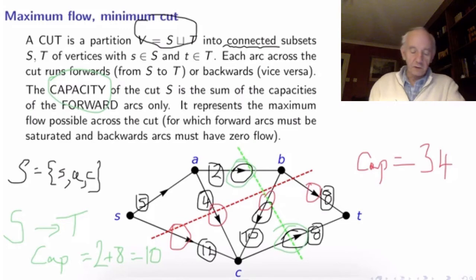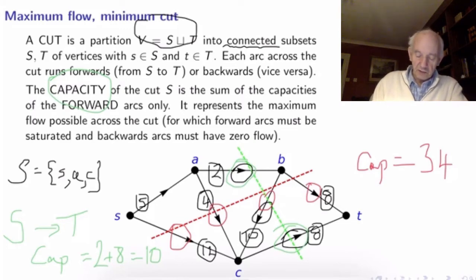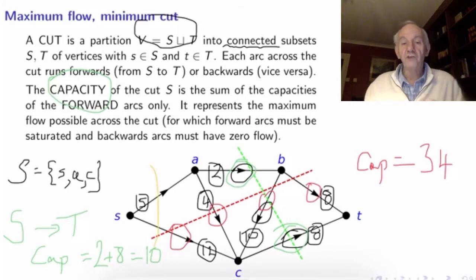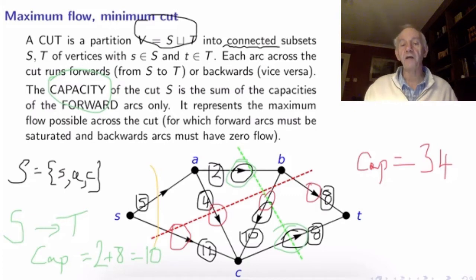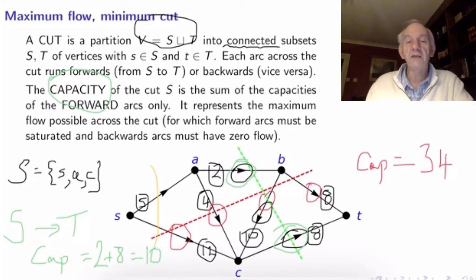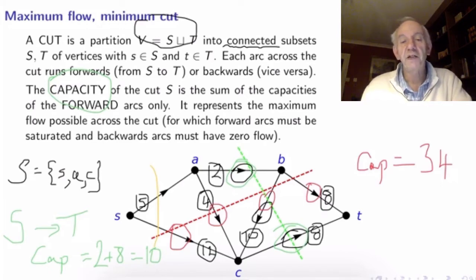For the red cut, the capacity is much more - four edges disconnect the network going across the cut, with capacities 12 plus 4 plus 10 plus 8, giving 34. If we take a yellow cut that just makes capital S a singleton set, the capacity is 5 plus 12, which is 17. Both are bigger than 10. That's the idea of a cut and how you define its capacity.